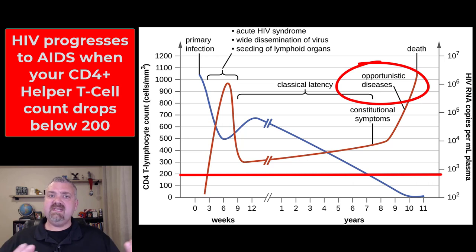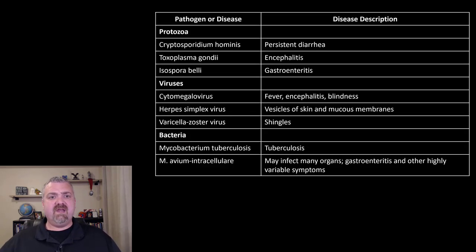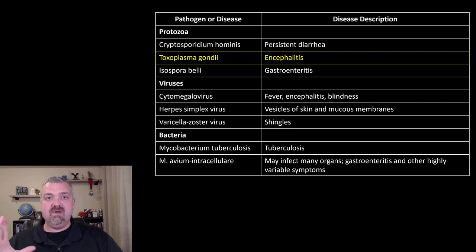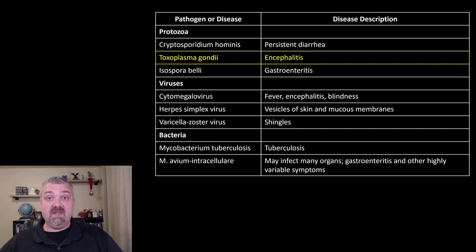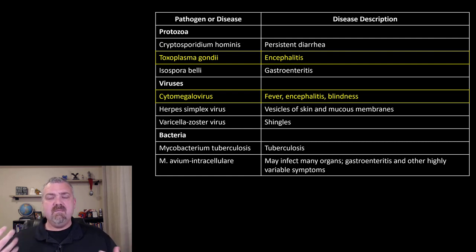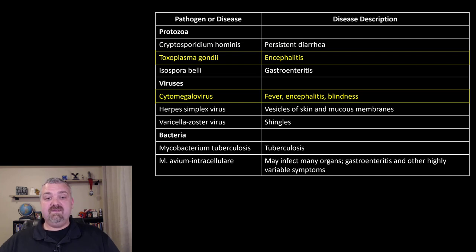These would be diseases that shouldn't impact someone with a normal immune system, or at least not the same way. For example, Toxoplasma gondii — only immunocompromised people should have a problem with this. Many people have been infected with this organism, but a healthy immune system walls it off. If you're immunocompromised, it can lead to encephalitis — inflammation and swelling in the brain. Cytomegalovirus is similar: most humans have been exposed, and it usually causes no problems or maybe a mild fever. But without a strong immune system, it can cause fever, encephalitis, blindness, even death.